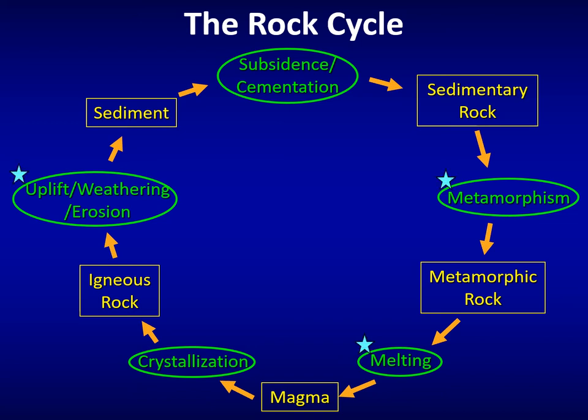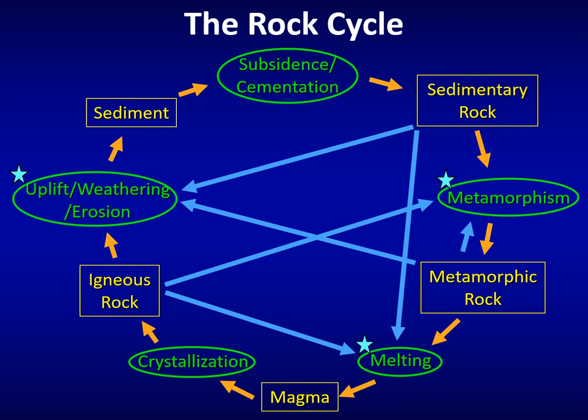All rock types can be uplifted, weathered, and eroded; metamorphosed; or melted. Adding arrows from all rock types to each of those processes gives us a complete cycle with no true beginning or end. If we had to identify a beginning, it would be when the Earth was a molten mass — and from that point, rocks have been cycling from one type to another for the last four and a half billion years.